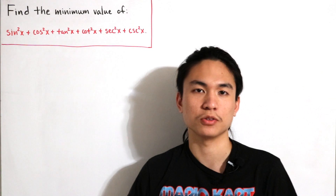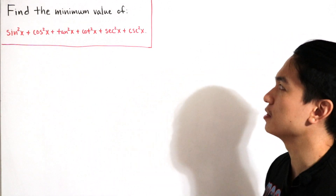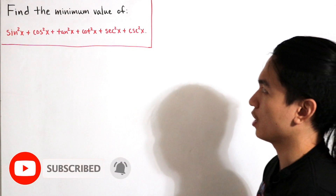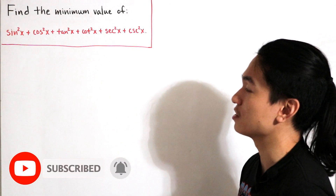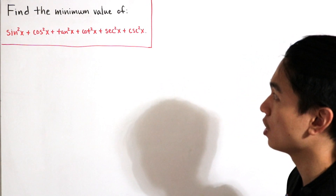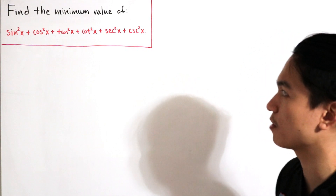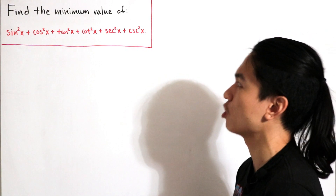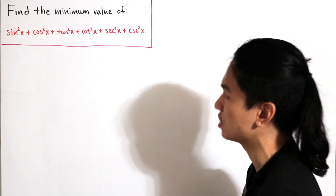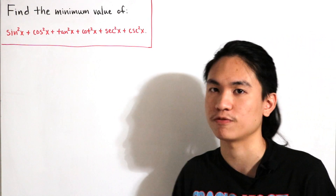Welcome back to another video. In today's video, we have the following trigonometry problem, and this is dealing with a little bit of calculus, since this is asking us to find the minimum value of the following function: sine squared of x plus cosine squared of x plus tangent squared of x plus cotangent squared of x plus secant squared of x plus cosecant squared of x. Everything we're dealing with is trigonometric functions.